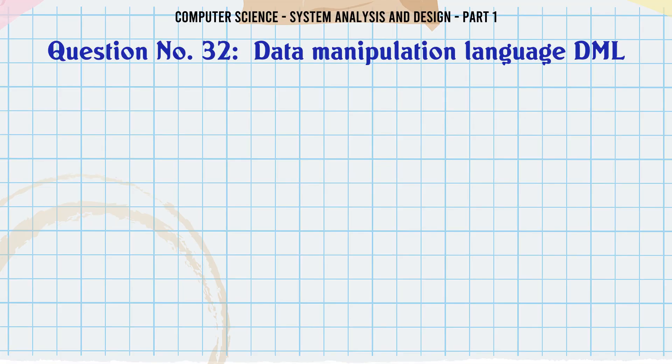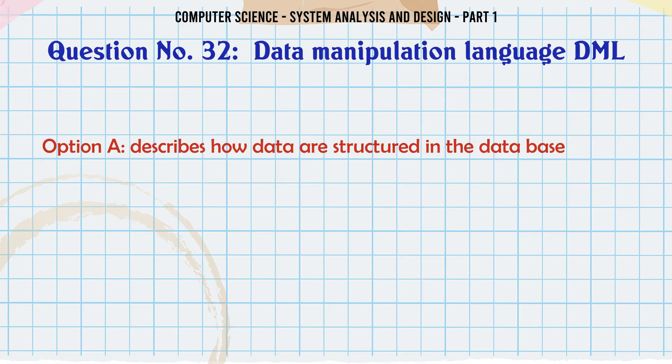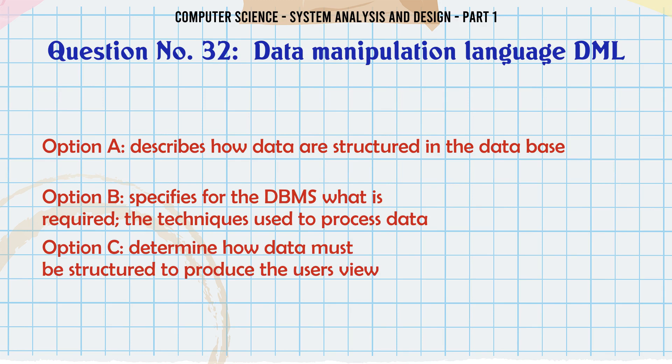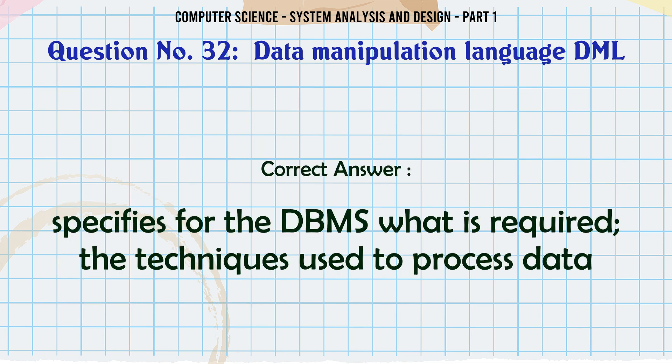Data Manipulation Language (DML): A. Describes how data are structured in the database. B. Specifies for the DBMS what is required and the techniques used to process data. C. Determines how data must be structured to produce the user's view. D. All of the above. The correct answer is: Specifies for the DBMS what is required and the techniques used to process data.